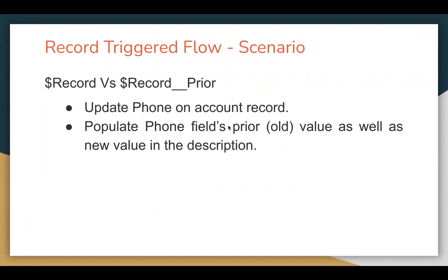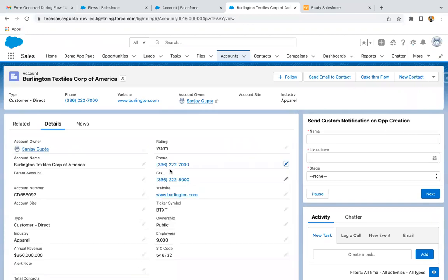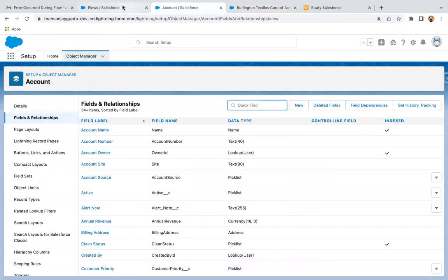Now I'm going to demo this with the help of a use case. We need to create a record trigger flow so that whenever we update a phone on an account record, we populate the phone field's prior value (old value) as well as the new value in the description field of that account record. Now I'm going to create this flow.